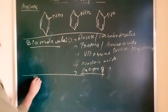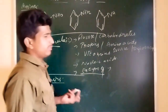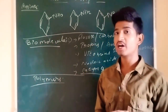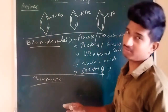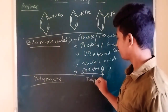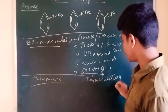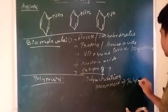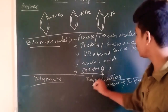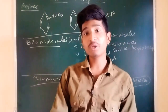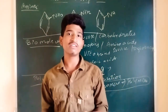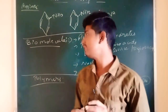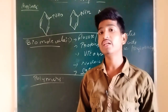The next chapter is polymers. In the process of polymerization, polymers are formed from monomers. The reverse process — polymers breaking into monomers — is called monomerization. We will study the types of polymerization, the uses of polymers, and whether they are biodegradable.